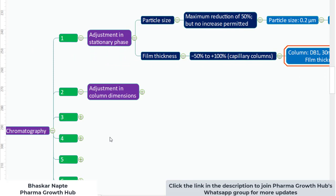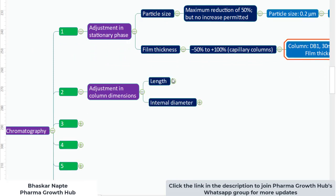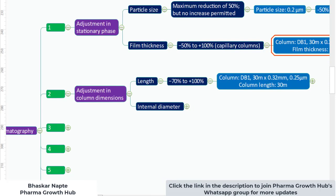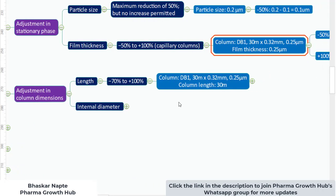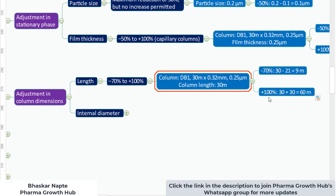The next point is adjustment in column dimensions. The length of the column can be changed by minus 70% to plus 100%. For a 30-meter column, minus 70% gives 9 meters, and plus 100% gives 60 meters. So if your column length is 30 meters, you can use a column from 9 meters to 60 meters, and this change is accepted according to USP general chapter 621.